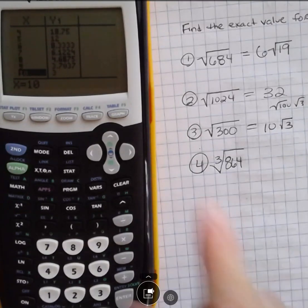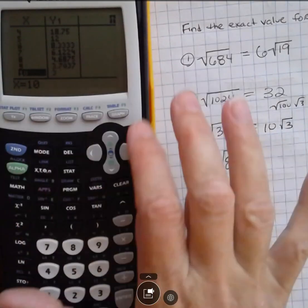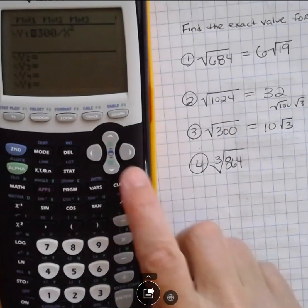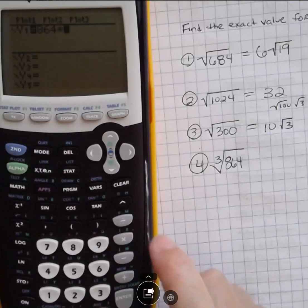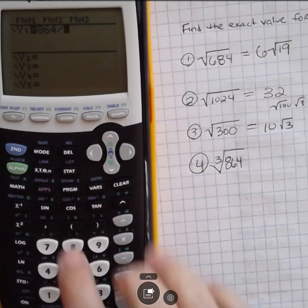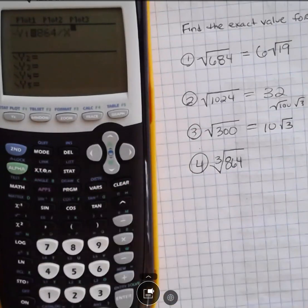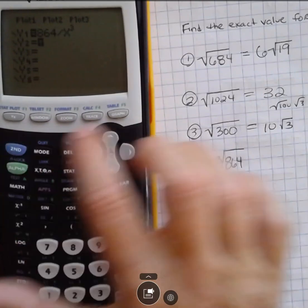If you want to do a cubic root, it's the same process. You want to go in here and put in your 864 or whatever number you have, not times, divided by, and I'm going to do x, but this time I'm going to have to use this button that I'm going to do to the third power. And then I'm going to do second function table.